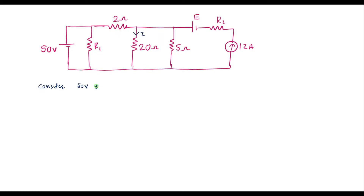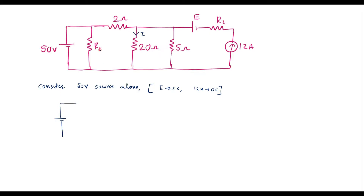Considering the 50 volt source alone, the voltage source E will be short circuited and the 12 amp current source will be open circuited. Let me redraw the circuit. We have 50 volt, and the resistor R1 is connected in parallel with the 50 volt source, so it acts as redundant — the voltage across R1 is 50 volt itself.